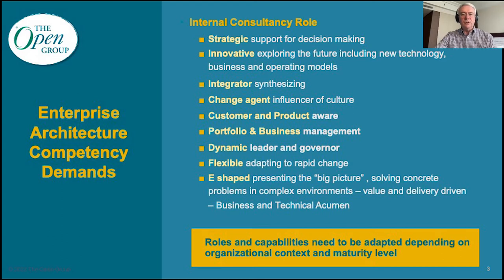The Glassdoor survey for 2022 of the 50 best jobs in America estimates that about 14,000 openings exist for EAs in the USA market at this time. This shortage has actually been an issue for many years and it's not limited to the USA — there is a chronic global shortage of available architects. The Glassdoor survey also identifies the number one ranked best job in the USA for 2022 as the enterprise architect, with average EA salaries currently at $145,000 US dollars a year and a job satisfaction rating of 4.1 on a scale of one to five.